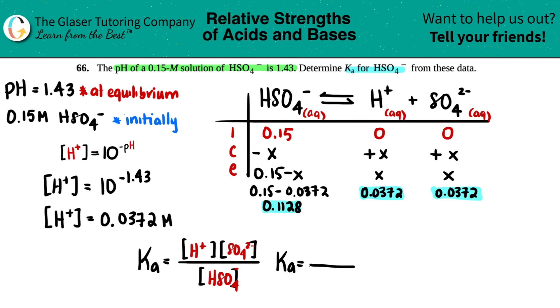Ka equals, H+ was 0.0372, so was the sulfate SO4 2-. So 0.0372 times 0.0372 divided by 0.1128. That's the equilibrium for HSO4. 0.0372 times 0.0372 divided by 0.1128 equals 0.0128, and without scientific notation, it would be 0.012.